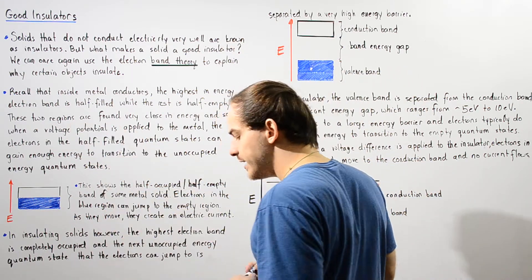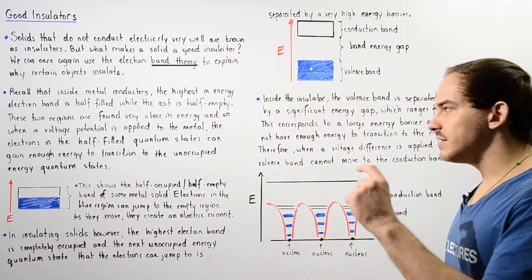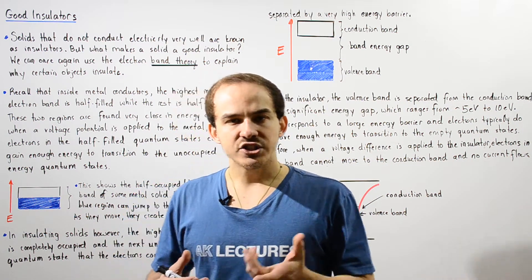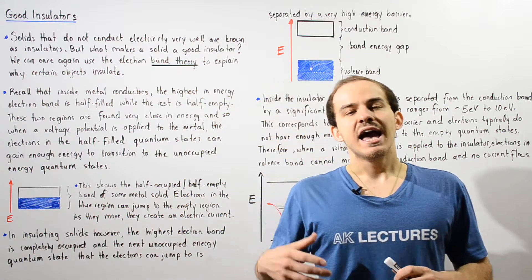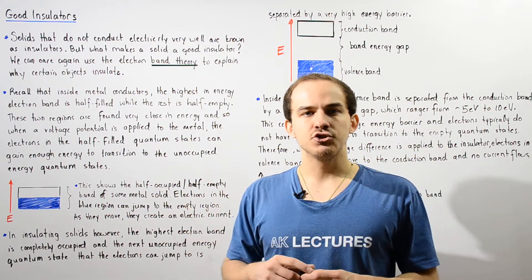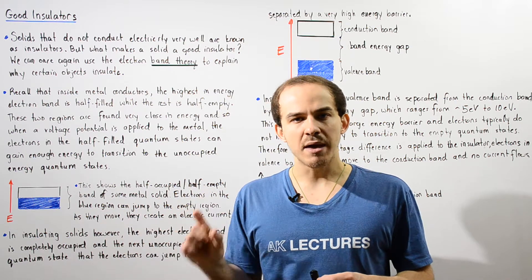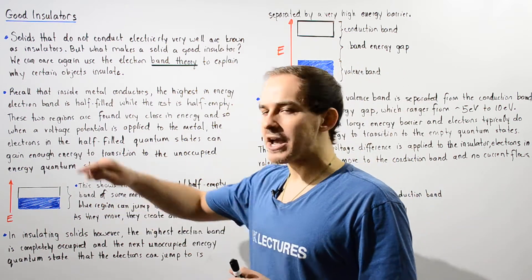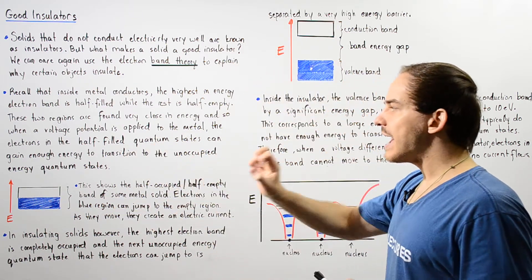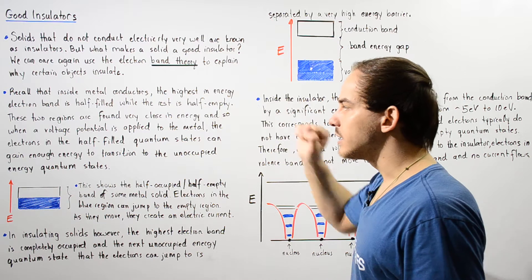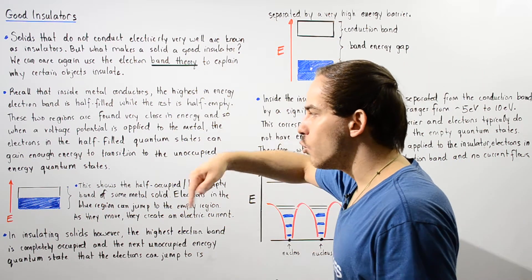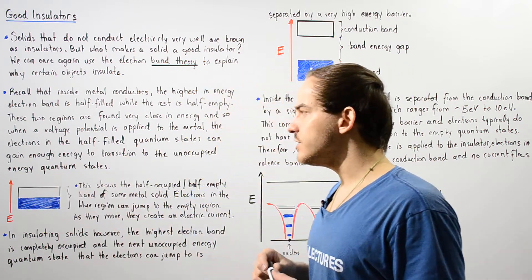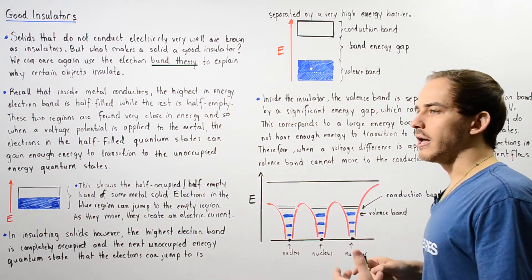These two regions — the half-filled and the half-empty regions — are found very close in energy. So when we apply an electric potential difference, a voltage difference, to our solid metal, our electrons can actually gain enough energy and transition between the half-filled and the unoccupied quantum states. As they move and transition within our unoccupied region, that creates an electric current.